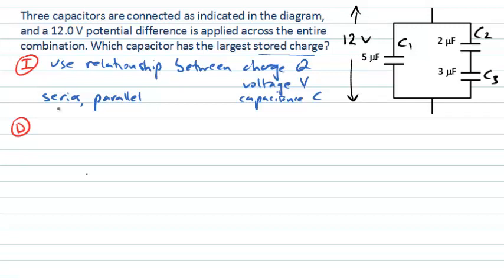Now the relationship that we need to remember is that the charge on a capacitor is the capacitance times the potential difference or voltage. So when we're trying to evaluate which one of these capacitors has the largest charge, it's going to be the capacitor that has the largest product of capacitance multiplied by voltage.